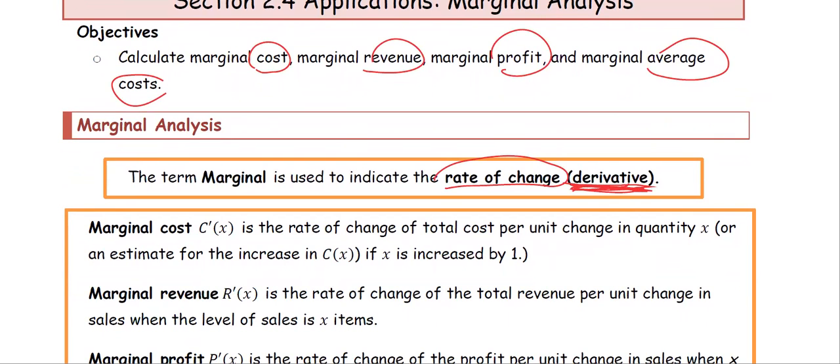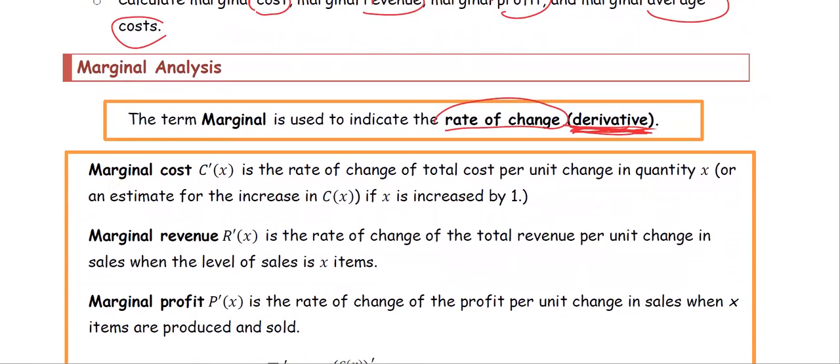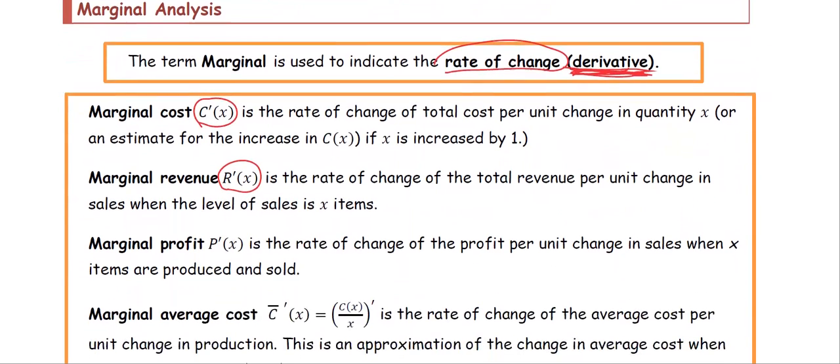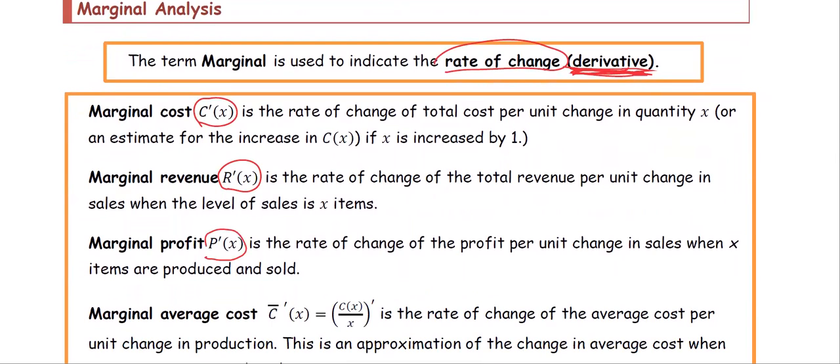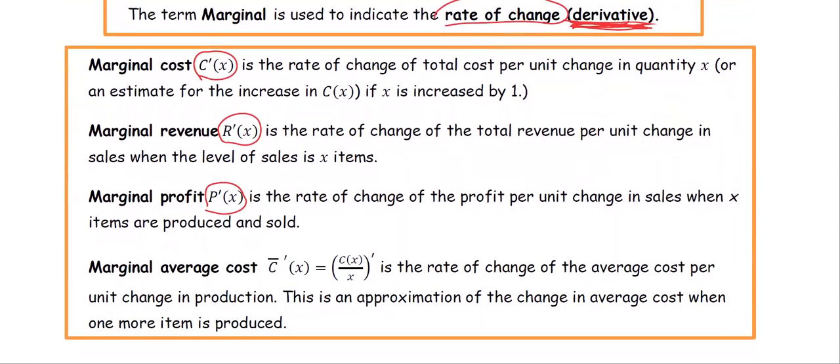When we talk about marginal cost, we use the notation capital C for the cost function. Marginal cost is represented by C prime. Revenue is represented by capital R, marginal revenue by R prime. Profit is capital P, and marginal profit is P prime, the derivative of the profit function.